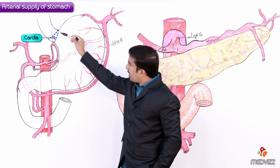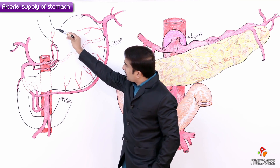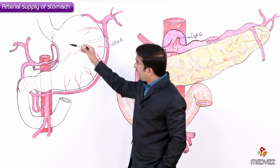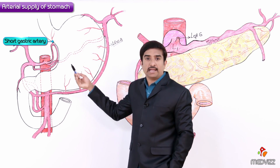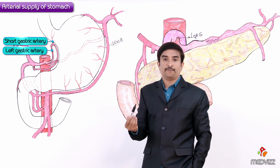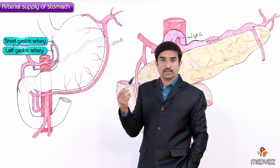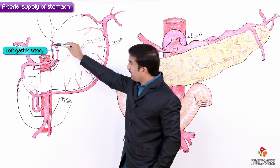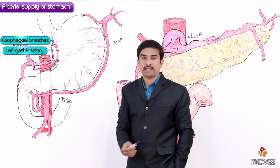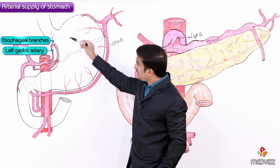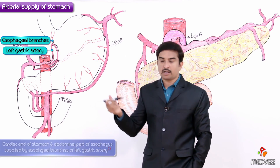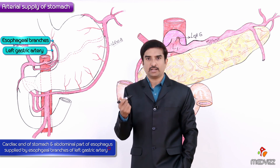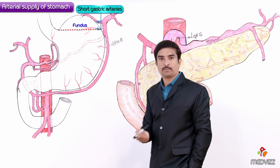Next, the arterial supply of the cardiac end of the esophagus and the abdominal part of the esophagus, also called the cardiac part of the stomach, is supplied by the esophageal branches of the left gastric artery. You should not confuse these with the short gastric arteries of the fundus. Simply put, the esophageal branches of the left gastric artery supply the abdominal part of the esophagus as well as the cardiac end of the stomach.